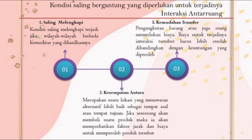Yang pertama adalah saling melengkapi, yang kedua adalah kesempatan antara, dan yang ketiga adalah kemudahan transfer. Kondisi saling melengkapi terjadi jika ada wilayah-wilayah tertentu yang berbeda komoditas yang dihasilkannya, berinteraksi melalui perdagangan atau jual beli. Kesempatan antara merupakan suatu lokasi yang menawarkan alternatif lebih baik sebagai tempat asal atau tempat tujuan; seseorang akan memperhatikan faktor jarak dan biaya untuk memperoleh produk. Kemudahan transfer: pengangkutan barang atau orang memerlukan biaya yang harus lebih rendah dibandingkan dengan keuntungan yang diperoleh.